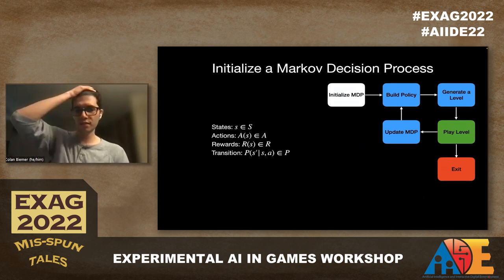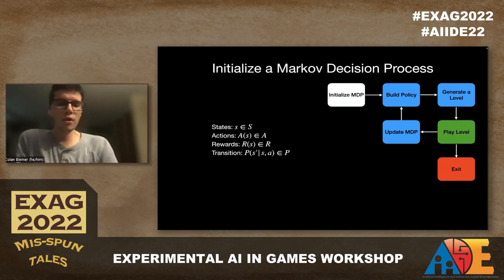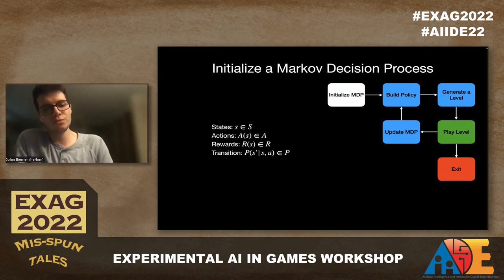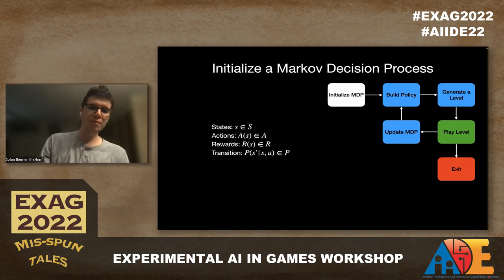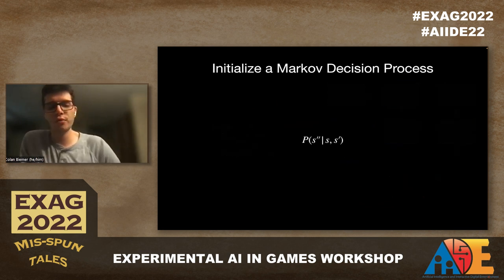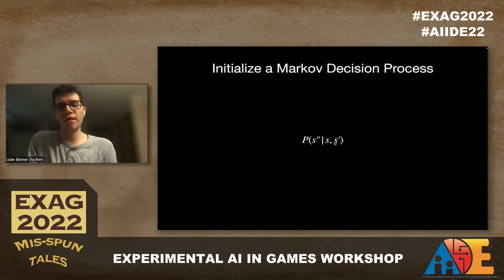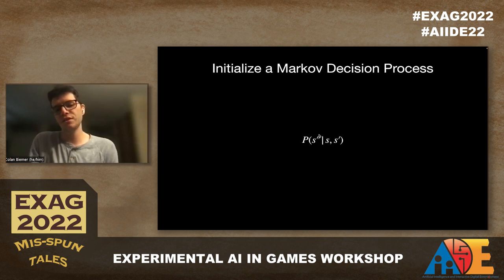Now let's look at the Markov decision process in more detail. A Markov decision process is made up of states, actions, rewards, and a transition table. In our specific implementation, we use a graph-like structure. S is the original state, S prime is the target state in the graph, and S double prime is the state you can actually transition to.